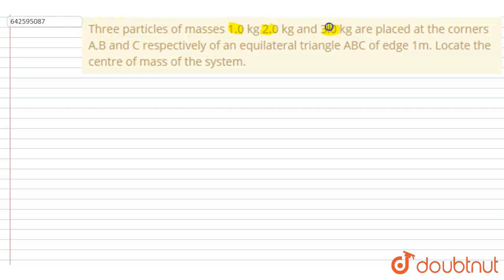1 kg, 2 kg, and 3 kg are placed at the corners A, B, C respectively of an equilateral triangle of edge one meter. Locate the center of mass of the system. So if you see the diagram, it will be like this.